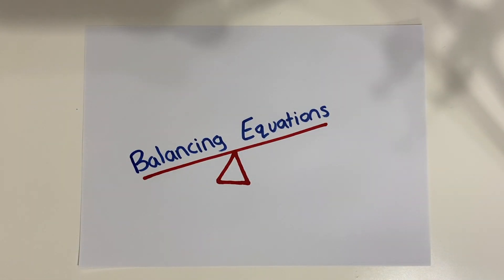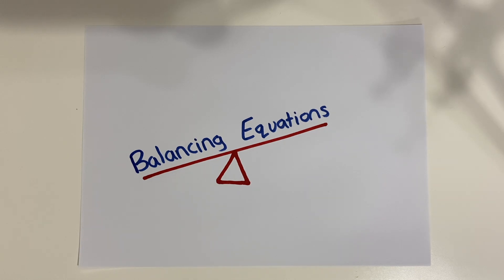In this video we're going to look at balancing symbol equations. If you're not confident writing symbol equations then you should look at the previous couple of videos I made — one called 'Writing Formulae for Ionic Compounds' and the other 'Writing Symbol Equations'. Once you can do that, the final thing you need to be able to do is make sure that they're balanced, and that's what we're going to look at in this video.